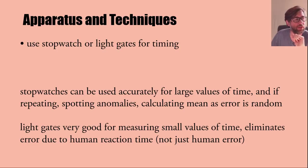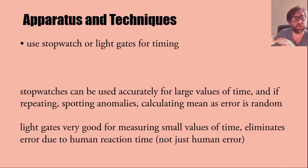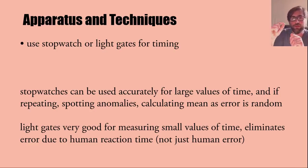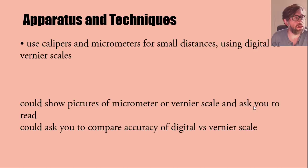Light gates are good for very small values of time and they eliminate the error due to human reaction time. Don't just state 'human error' — that won't get you a mark. Don't just state 'random error' either. You need to state what the error is, what's causing it, and what's leading to the uncertainty.